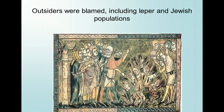Outsiders were blamed, including populations that lived outside the Christian communities. In 1348, a trial of Jews at Chillon was supported by evidence extracted by torture. In Basel, all the Jews were pinned into wooden buildings and burned alive. Similar scenes occurred in Stuttgart, Ulm, Speyer, and Dresden. 2,000 Jews were massacred in Strasbourg, and in Mainz as many as 12,000. Many fled to the Kingdom of Poland, where tolerance was much more prevalent.